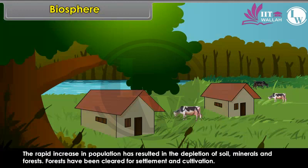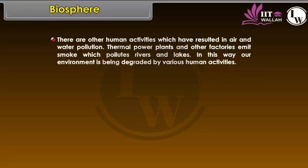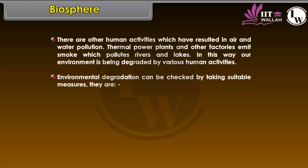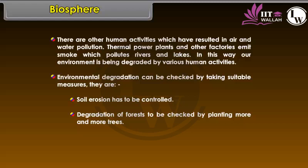Forests have been cleared for settlement and cultivation. There are other human activities which have resulted in air and water pollution. Thermal power plants and other factories emit smoke which pollutes rivers and lakes. In this way, our environment is being degraded by various human activities. Environmental degradation can be checked by taking suitable measures: soil erosion has to be controlled, and degradation of forests must be checked by planting more and more trees.